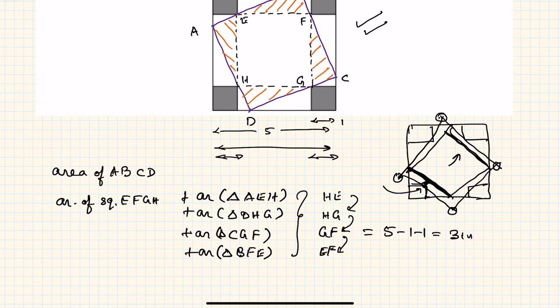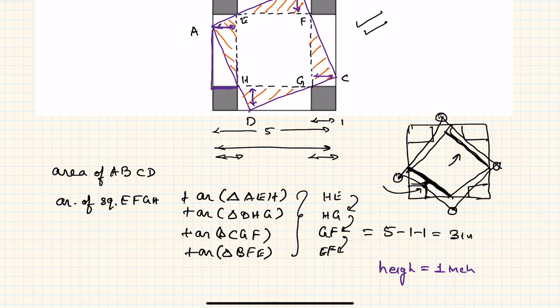The height of all these triangles is also the same — it is the distance between the two parallel lines. The height is one inch, because this forms a rectangle, so this height is equal to the corresponding side of the cut-out corner. Hence all the triangles have the same base of three inches and the same height of one inch.